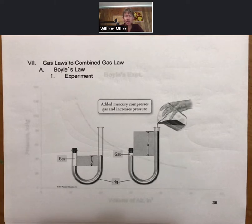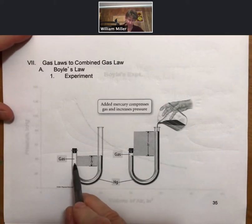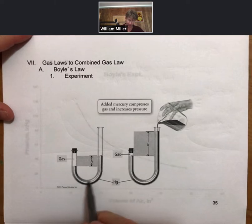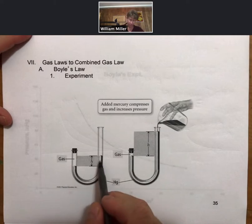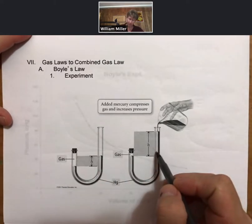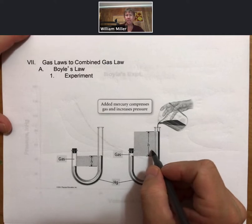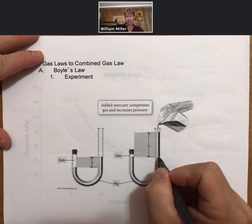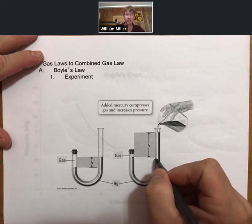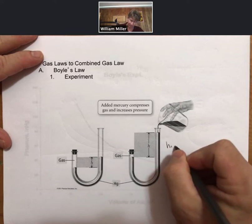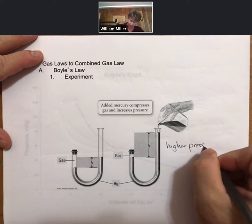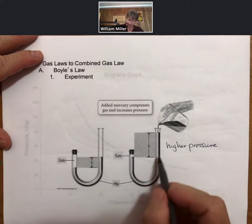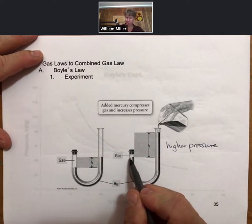The first of these is Boyle's law, and what we can imagine is a simple experiment where we have a gas trapped between liquid mercury and a rubber stopper in a glass tube. What we then do is add more liquid mercury to the tube. The height of liquid mercury equals a pressure, and in fact millimeters of mercury is a pressure, so higher pressure. And that higher pressure would lead to a smaller volume.